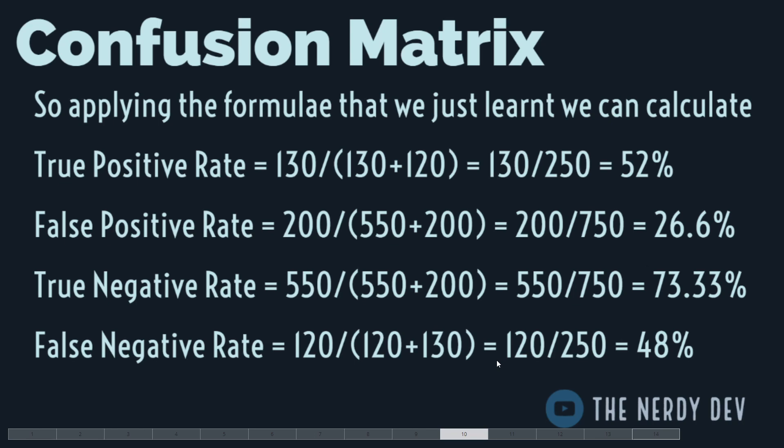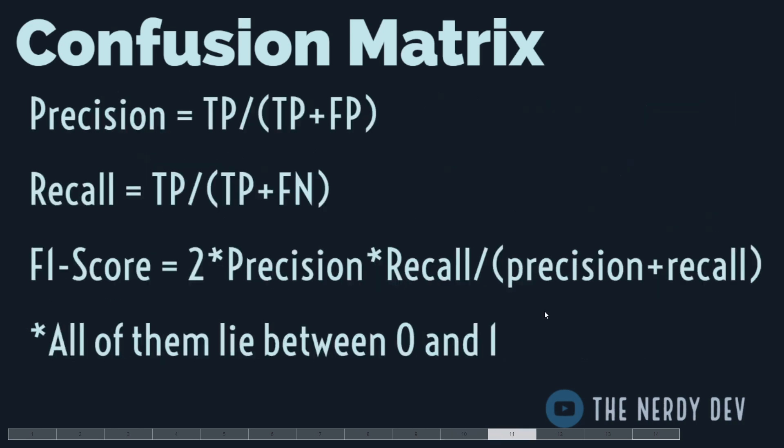That covers the confusion matrix. Now let us move forward and understand the concepts of precision, recall, and the F1 score — both precision and recall are closely related to the confusion matrix.